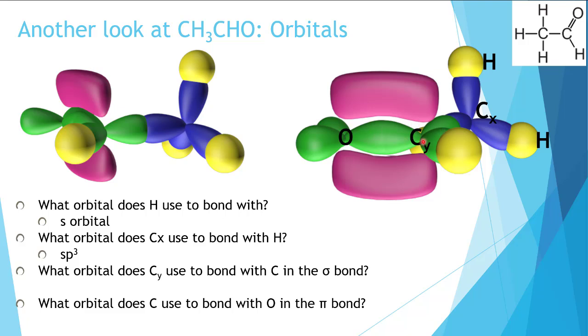Now this carbon is sp2 hybridized. So this carbon is going to contribute an sp2 orbital to this carbon-carbon sigma bond. So this carbon-carbon sigma bond is formed by an sp2 overlap from here and an sp3 overlapped from here.